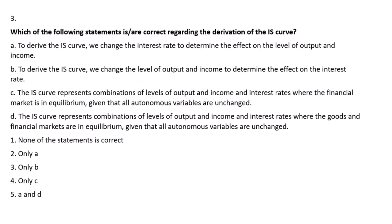Which of the following statements is correct regarding the IS curve? Statement A: to derive the IS curve, change the interest rate to determine the effect on the level of income and output — correct. Statement B: to derive the IS curve, change the level of income and output — incorrect. When we talk about the IS curve, we start with changes in the interest rate. Statements C and D are also incorrect. Therefore, only A is correct — the answer is option 2.